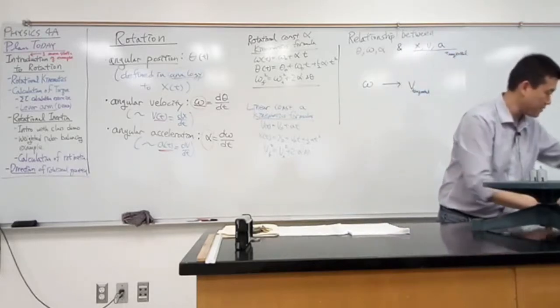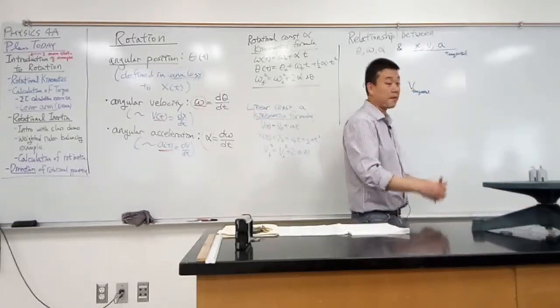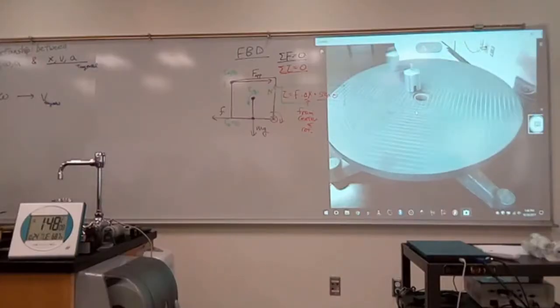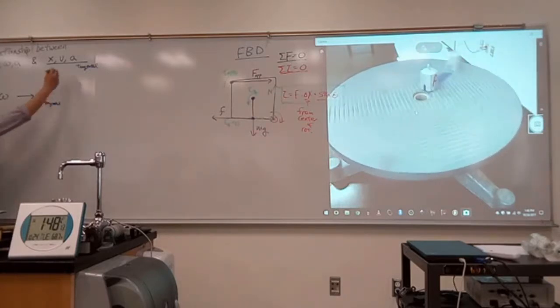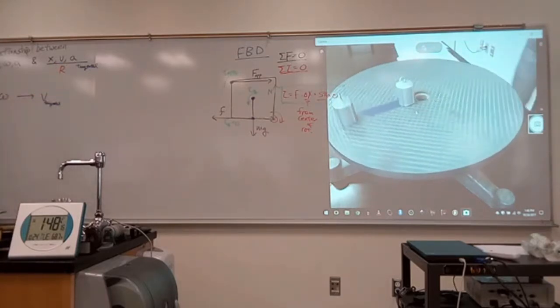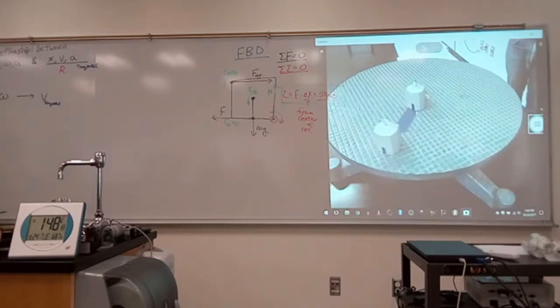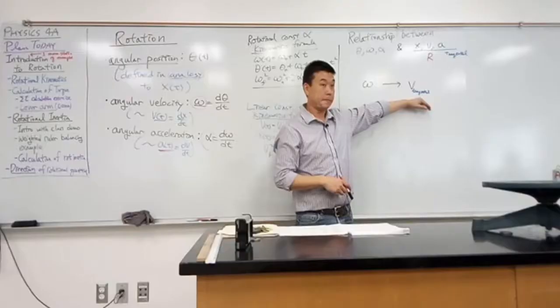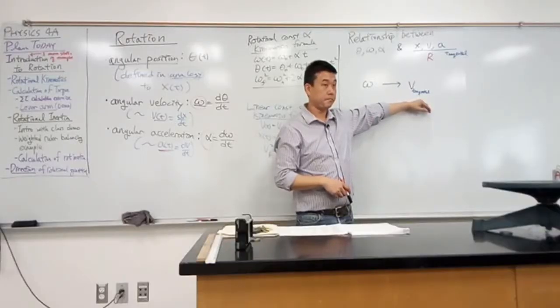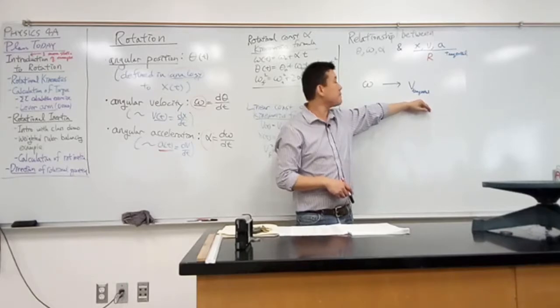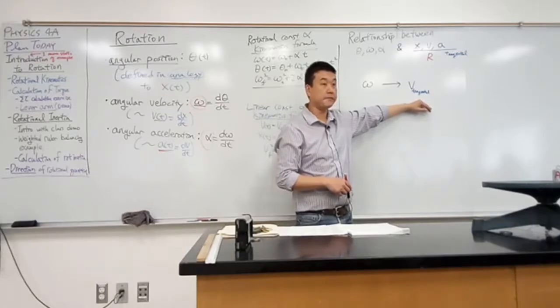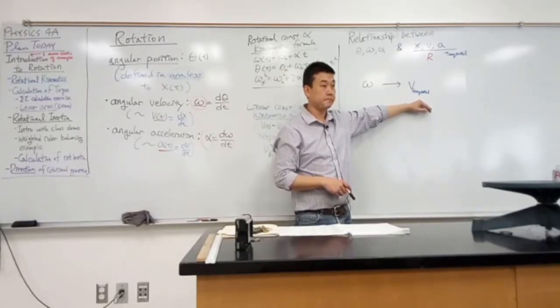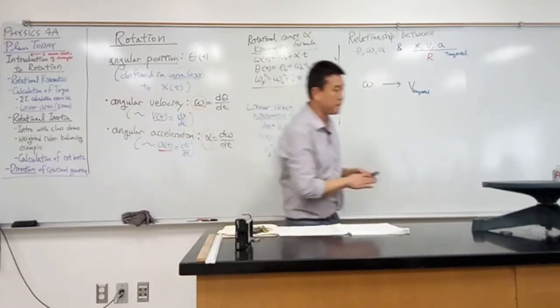One additional parameter you need to know is the distance from the center of rotation. Let me call that r, and that's why we use the word radius often, because we're imagining a circle that this is moving in the path of. Does anybody know, using r and omega, what the expression for tangential velocity should be? It's something you can remember very easily if you remember how we define our angles.